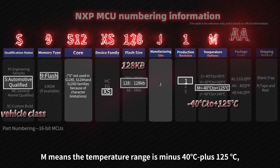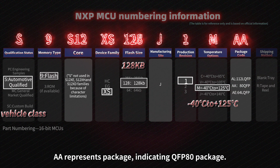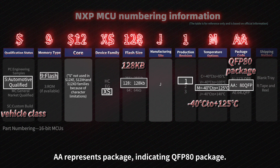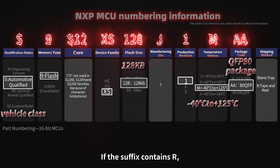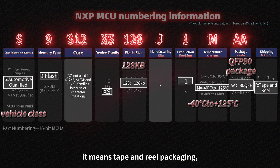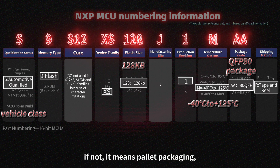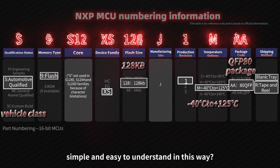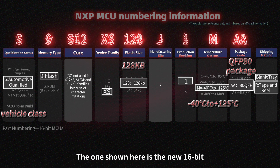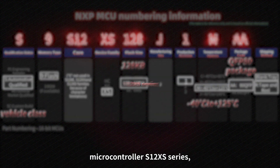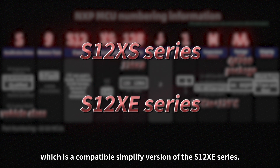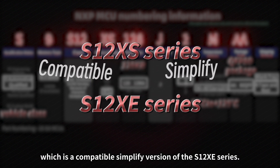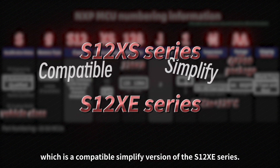AA represents the package according to the LQFP80 package. Finally, there are options for surface: if the suffix contains R, it means tape and reel packaging; if not, it means pallet packaging — simple and easy to understand. The one shown here is the new CGB microcontroller S12XS series, which is the compatible simplified version of the S12XE series.